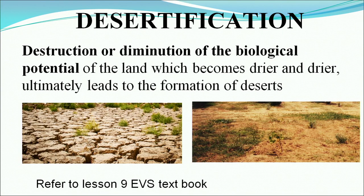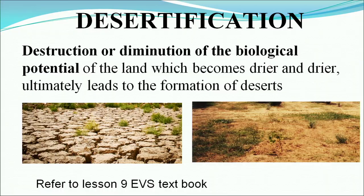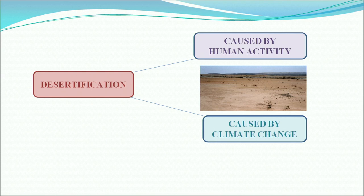Desertification is our next topic. It is the destruction or diminution of the biological potential of land, which becomes drier and drier, ultimately leading to the formation of desert. The pictures show land on the way to desertification and the situation arising from lack of water in the soil. A tabulation shows the effects of desertification caused either by human activities or climatic change.